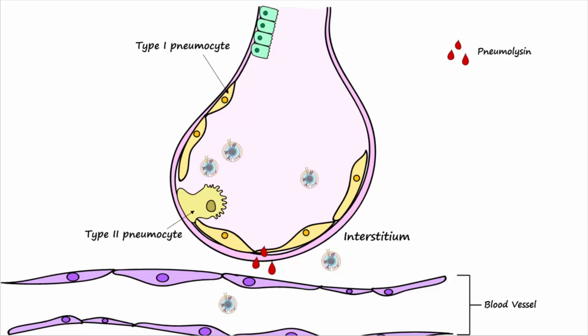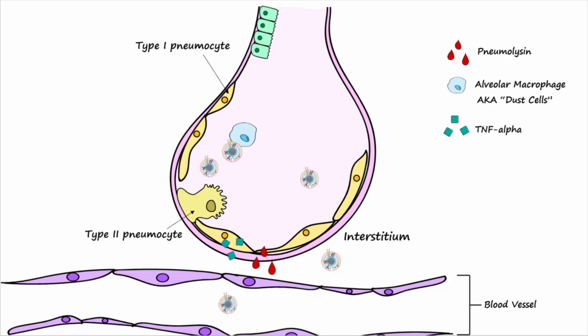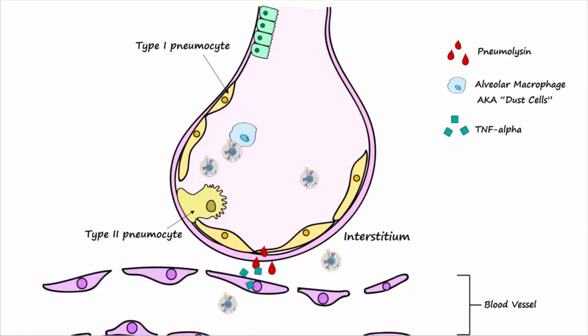This invasion of the alveoli triggers an inflammatory response as alveolar macrophages, or dust cells, use toll-like receptors to recognize pathogen-associated molecular patterns on the surface of the bacteria. This interaction triggers the dust cells to produce cytokines like TNF-alpha and IL-1, which further the inflammatory response and leads to lung capillary endothelial cell retraction, making the capillaries leaky. It also increases the gaps between the type 1 pneumocytes of the alveoli.